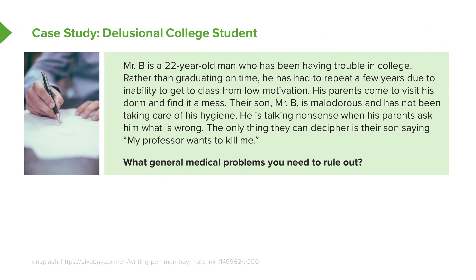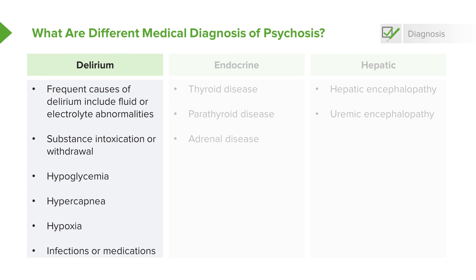At the top of your differential is a general medical problem. When it comes to psychosis, what types of general medical problems are important to rule out? Delirium is a frequent cause of psychotic symptoms and could be due to fluid or electrolyte abnormalities, substance intoxication or withdrawal, hypoglycemia, hypercapnia, hypoxia, infections, or other medications. These are all possible causes of a delirious patient that could look psychotic.